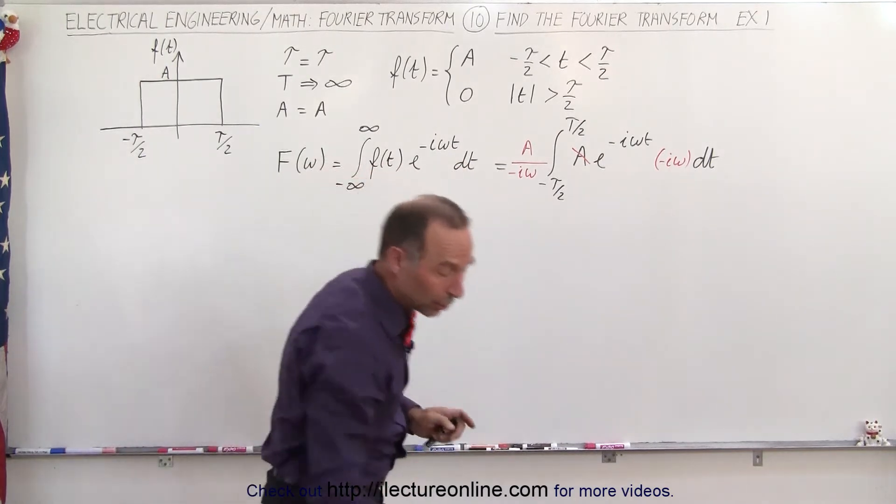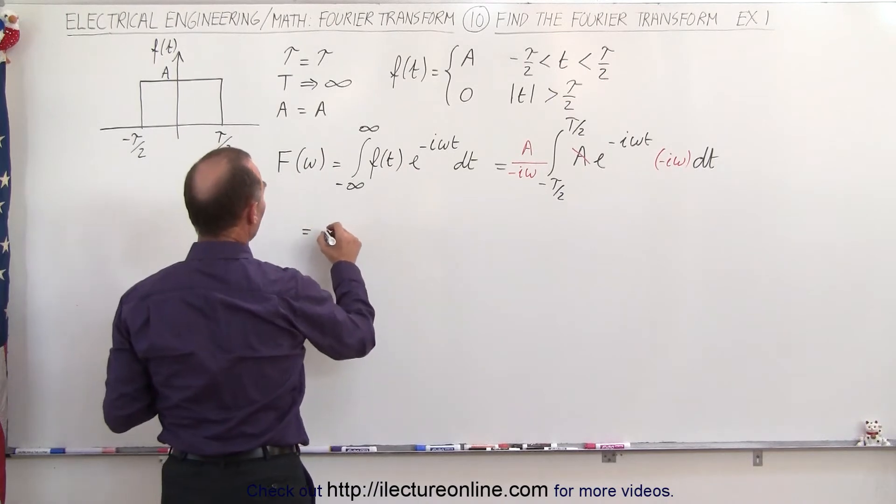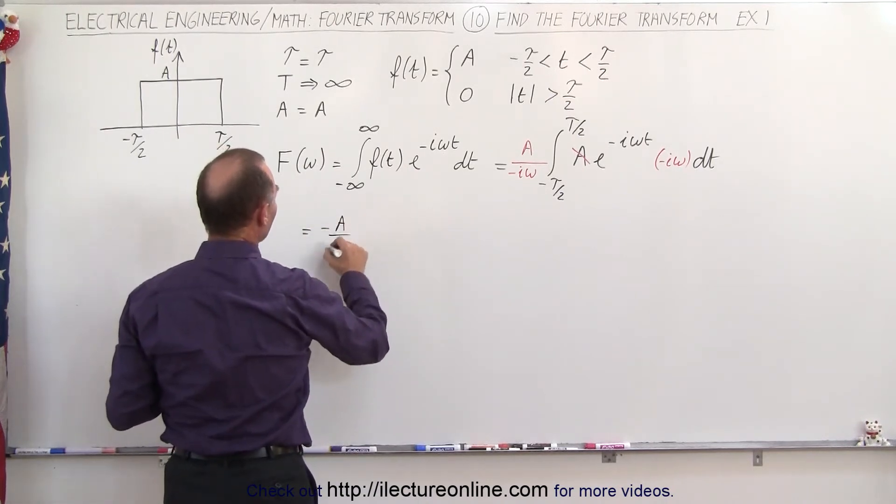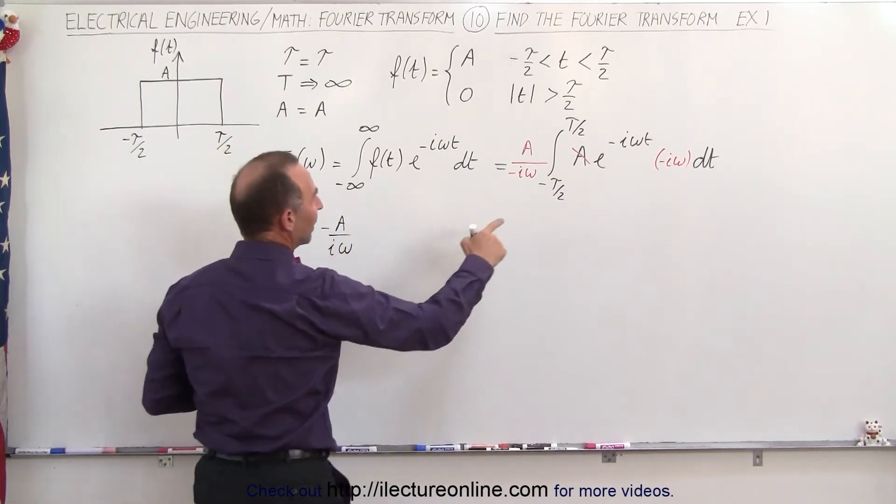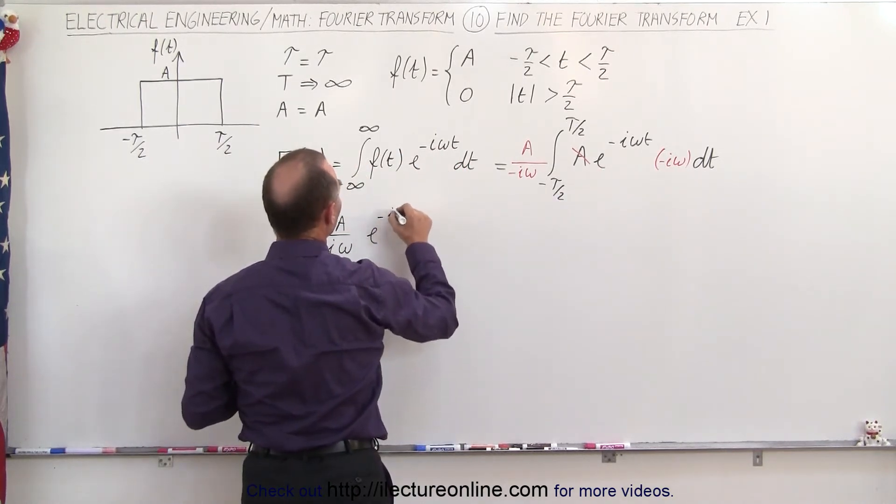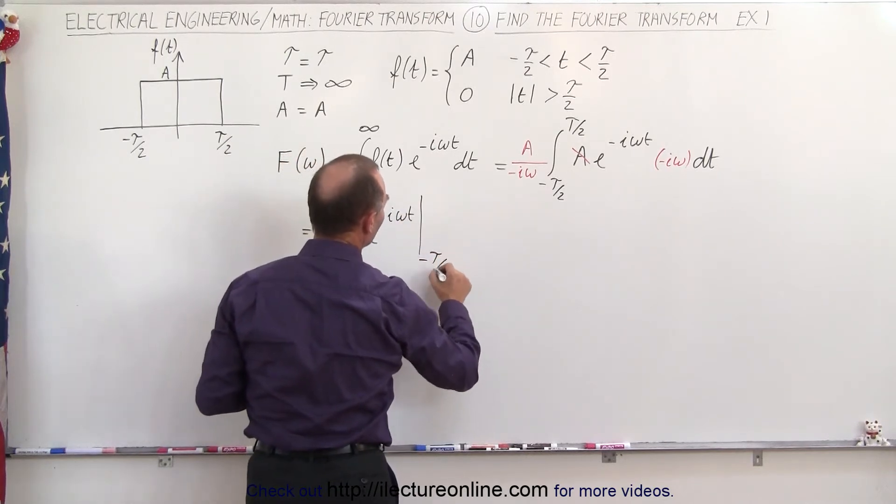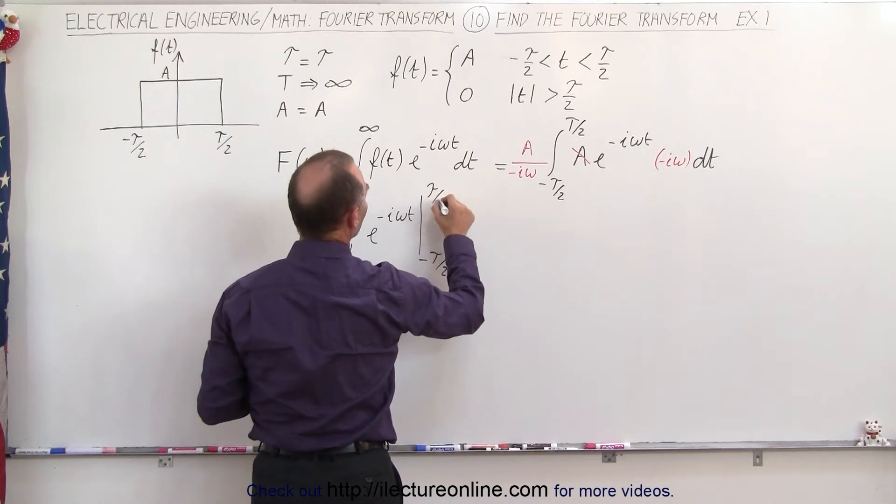So now I'm ready to go ahead and integrate that. So this becomes equal to minus A over i omega times the integral of this, which is simply going to be e to the minus i omega t, evaluated from minus tau over 2 to a positive tau over 2.